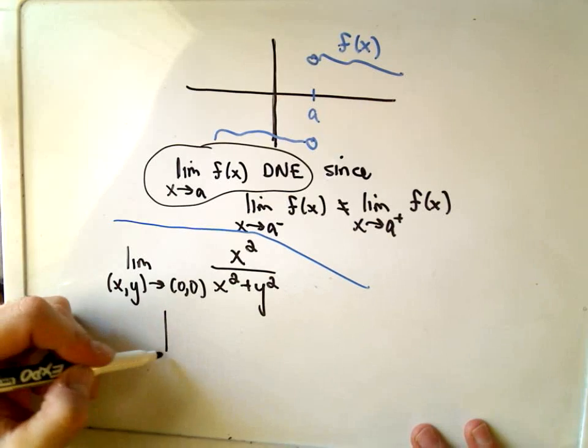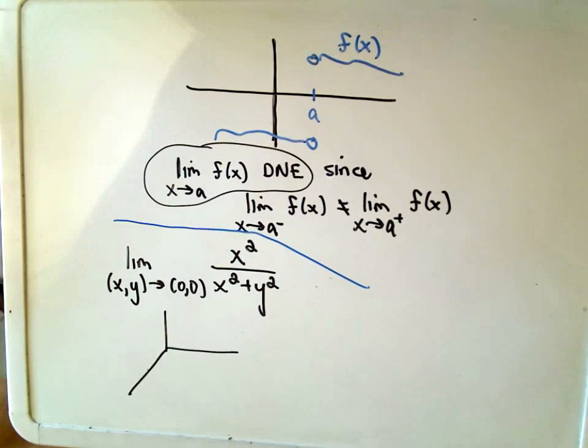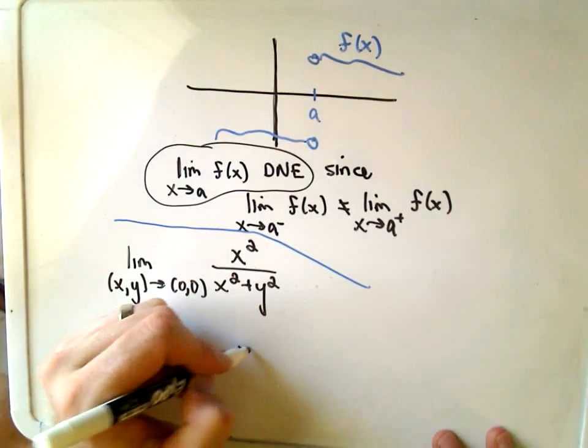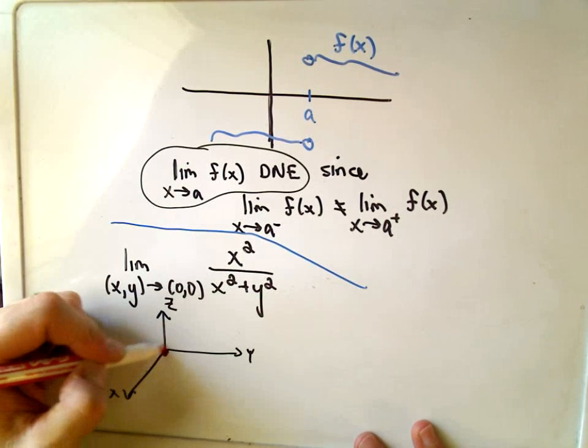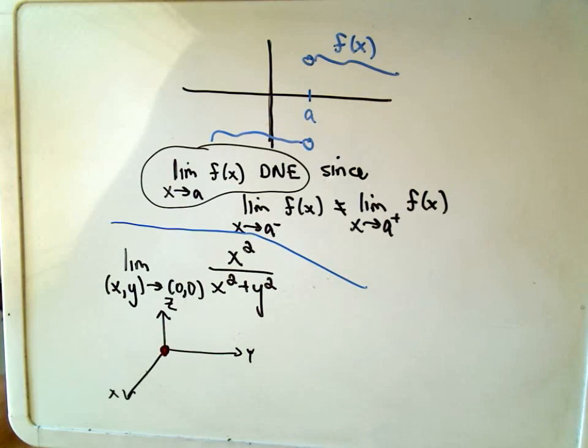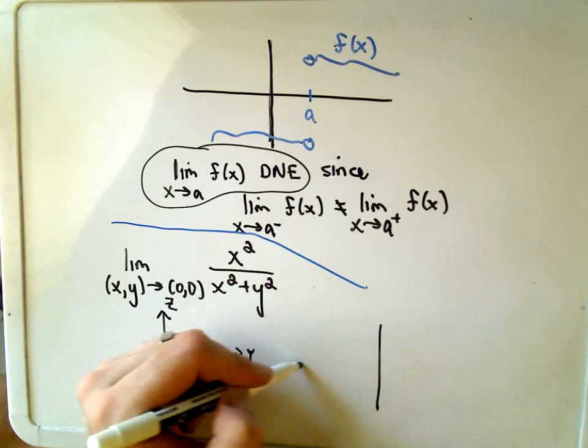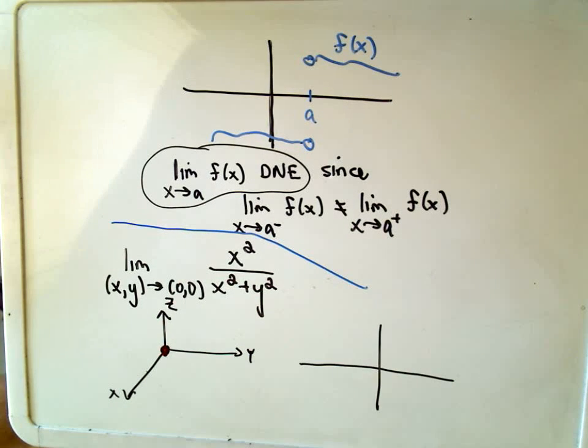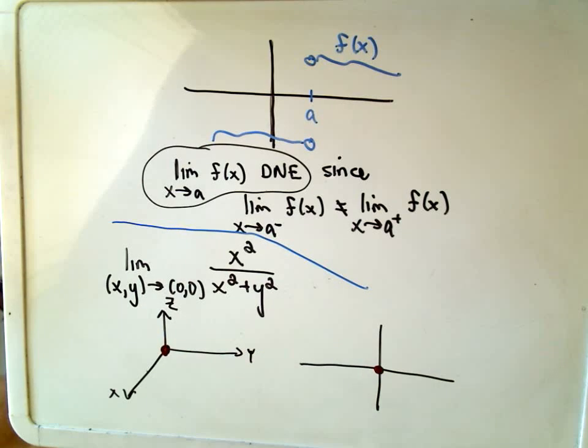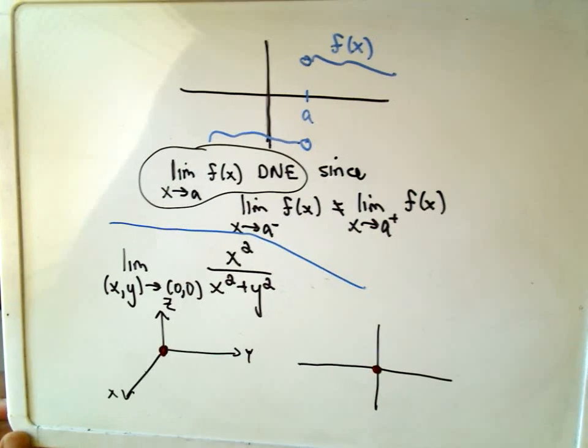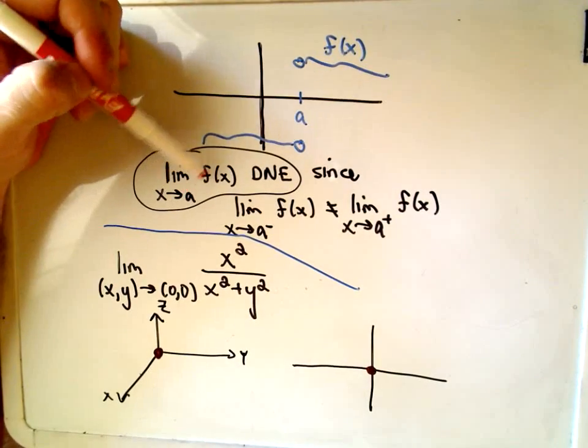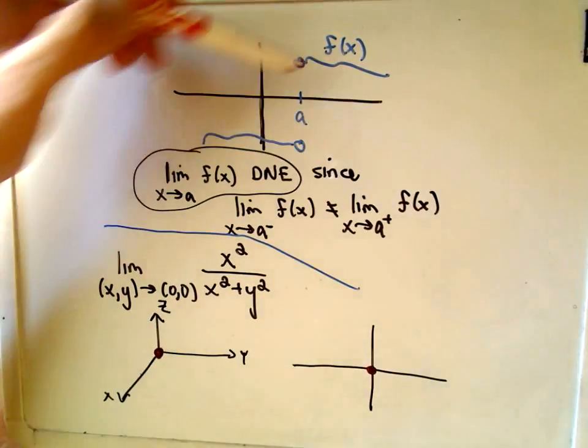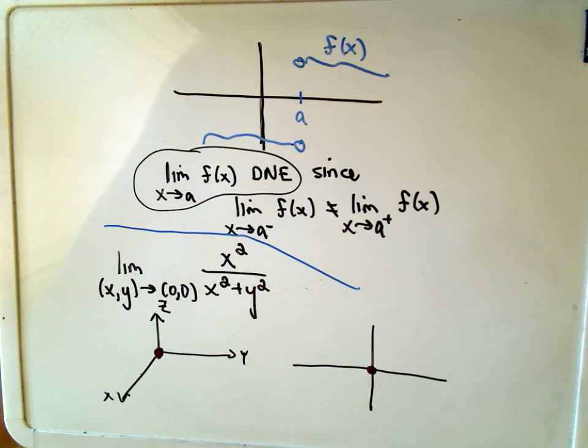Okay, so we could graph this function x squared over x squared plus y squared, whatever it looks like. Now, the idea is x and y are approaching the point 0, 0. So I'm going to make a little picture in 2D. Okay, so the x-coordinates getting closer to 0 and the y-coordinates also getting closer to 0. Again, in the 2D case, the only way you can get close to this number a is either, well, you approach it from the left or you approach it from the right. Nothing else can happen.